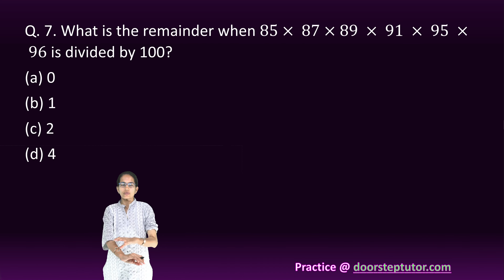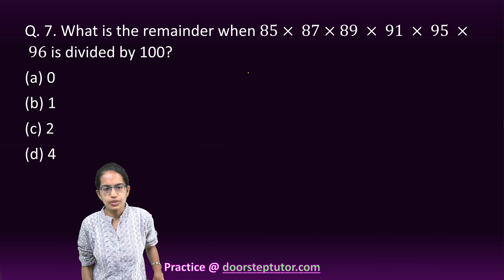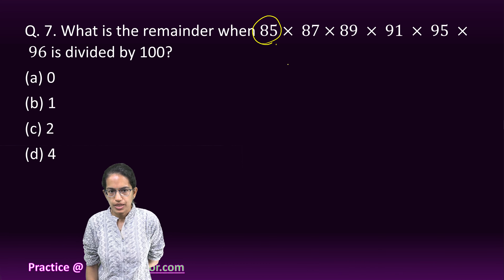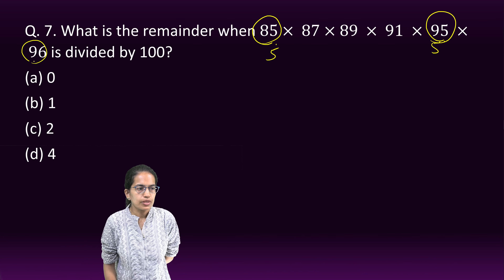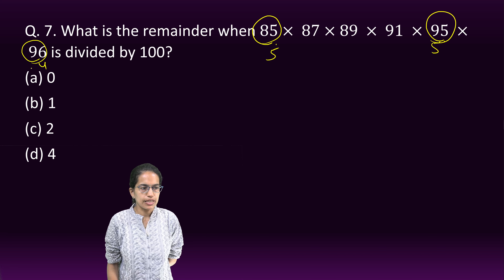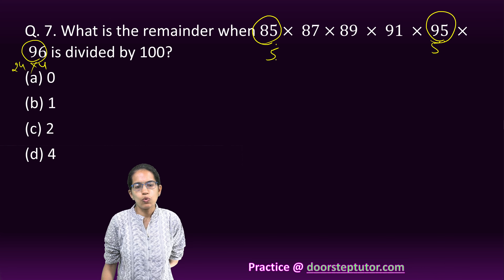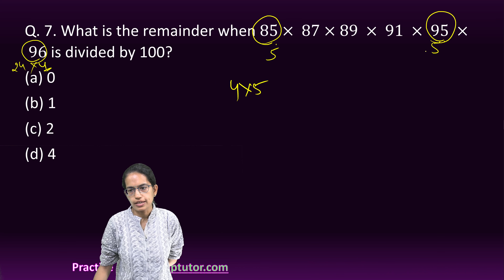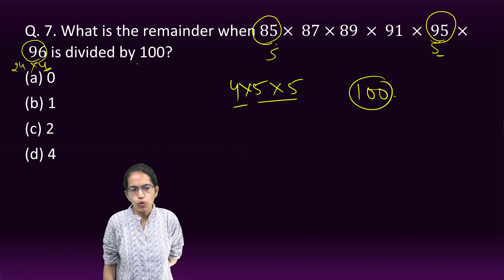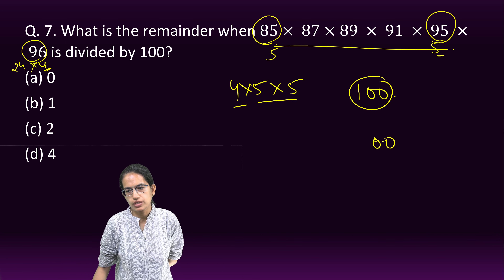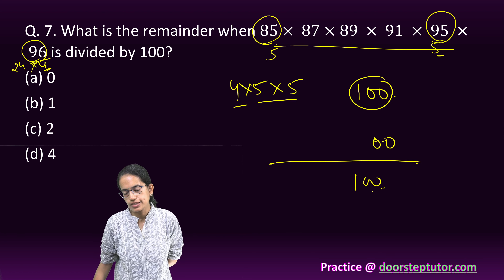The next question is a very interesting problem: find the remainder when these numbers are multiplied. I simplify 85 and 95 — these could be multiplied by 5. Then for 94 and 96, I take the factor of 4, giving 24×4. When I multiply this 4, this 5, and this 5, I get 25×4 which is 100. So by all means, I would have double zero at the end of the number created by multiplication. Since it ends in 00 and the divisor also ends in 00, they cancel out. My remainder would in all cases be 0.